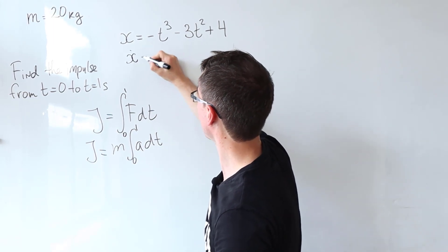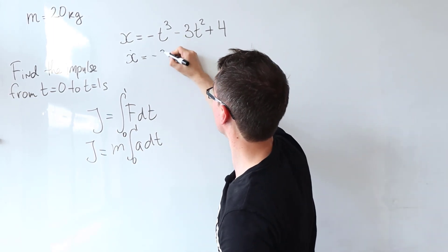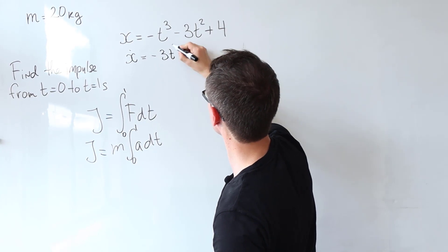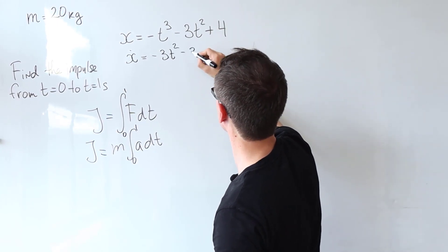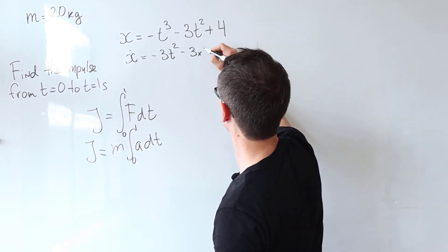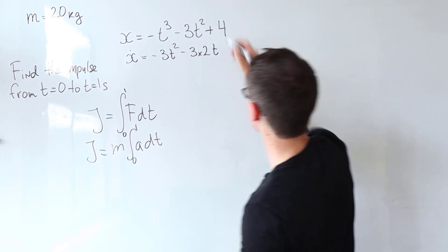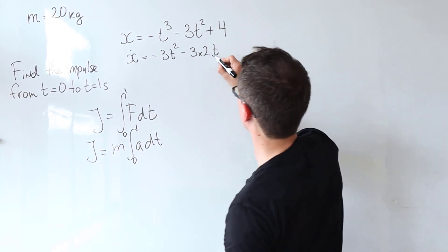So first derivative x dot, this will just be minus 3t squared take away 3 times 2 multiplied by t and then this here disappears.